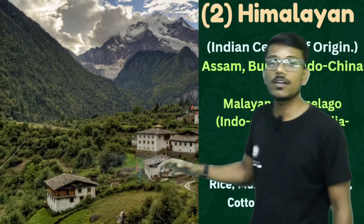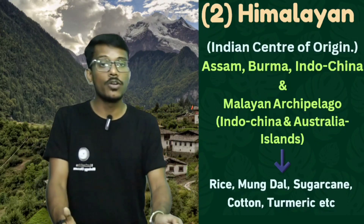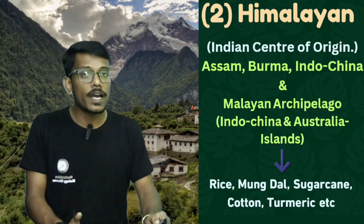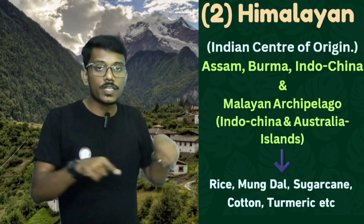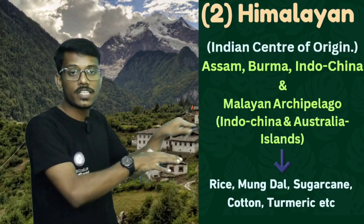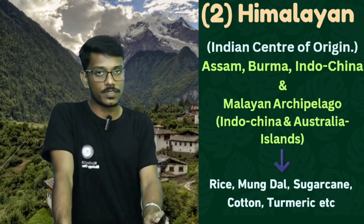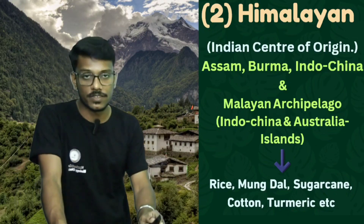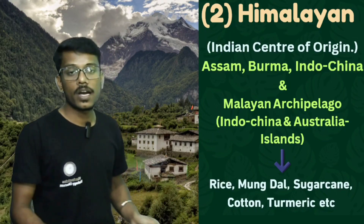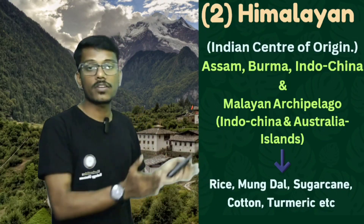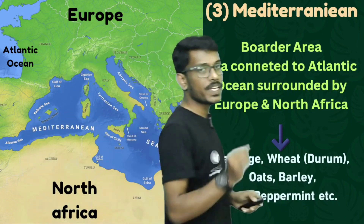Next is the Himalayan center of origin, also called the Indian center of origin. This comprises Assam, Burma, Indo-China, and the Malayan Archipelago — that is, the group of islands surrounding India, China, and Australia. From this Himalayan or Indian center of origin, crops like rice, moong dal, sugarcane, cotton, and turmeric originated.